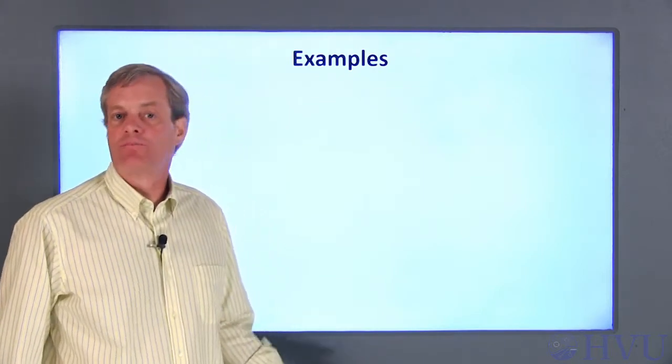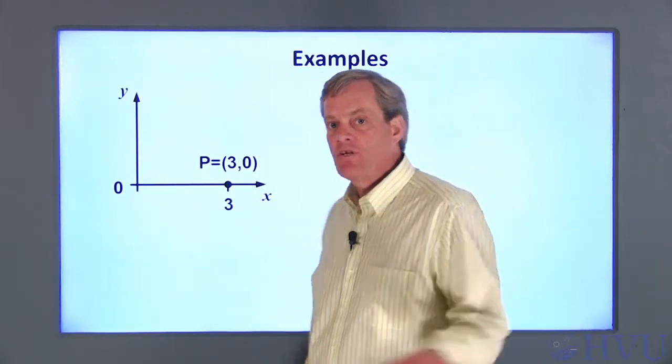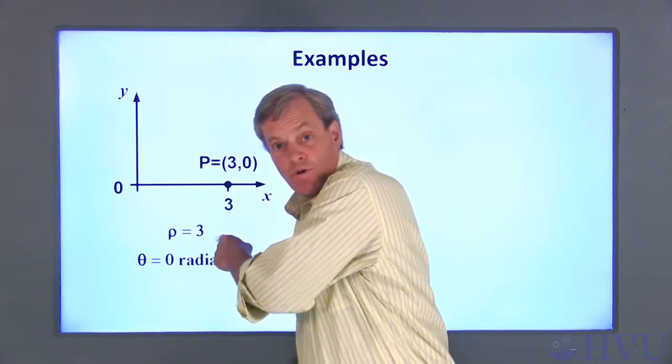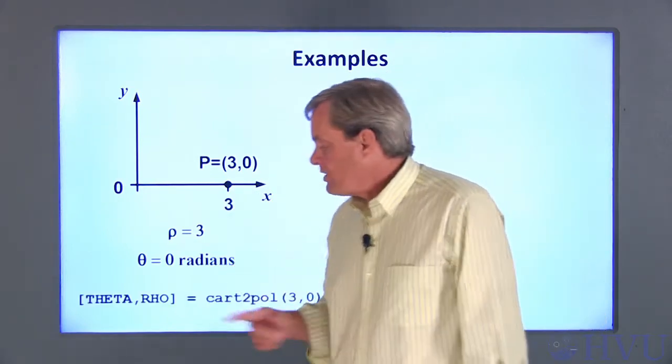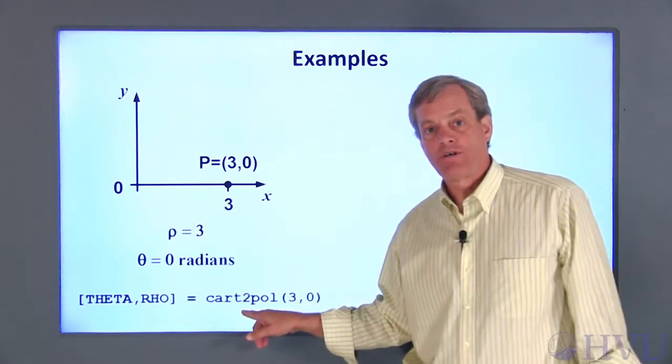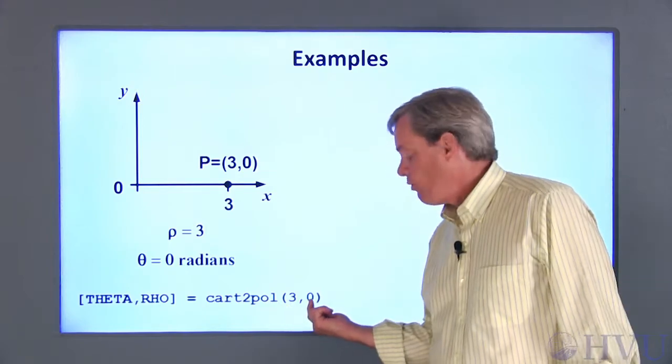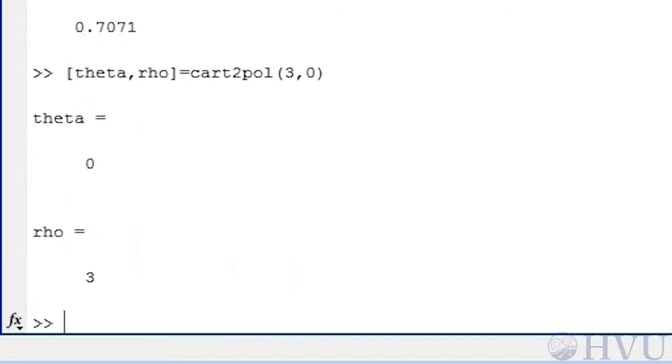Now let's do a couple of quick examples with the cart2pol function to illustrate the use of functions with multiple arguments. In our first example, let's convert the Cartesian coordinates (3,0) to polar coordinates. The point is 3 units from the origin, so we expect rho to be 3 for this example. Since the point is on the x-axis, we'd expect theta to be 0. We can use the MATLAB command theta comma rho equals cart2pol of 3 comma 0 to perform the conversion. Notice that the x-coordinate is first on the input list and the y-coordinate is second. First, I'll just type the command as it was on the previous slide. This returns theta equals 0 and rho equals 3 as we'd expected.